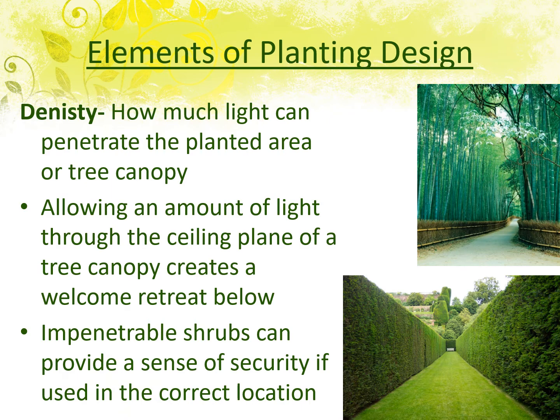Density is how much light can penetrate a planted area or tree canopy. Thinking about this as the vertical walls of our room: a sheared wall of shrubs is very dense, almost like a solid block wall with no light penetrating it; a bamboo forest type planting lets light filter through and creates a different experience. Impenetrable shrubs can provide a sense of security when used in the correct location — that's why you see many movie stars using these to protect their privacy.